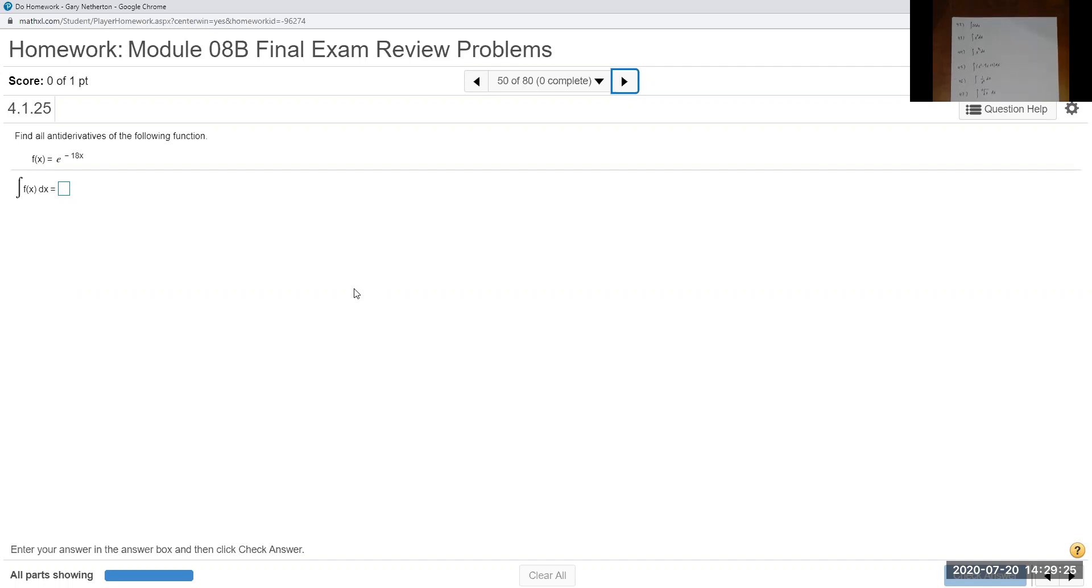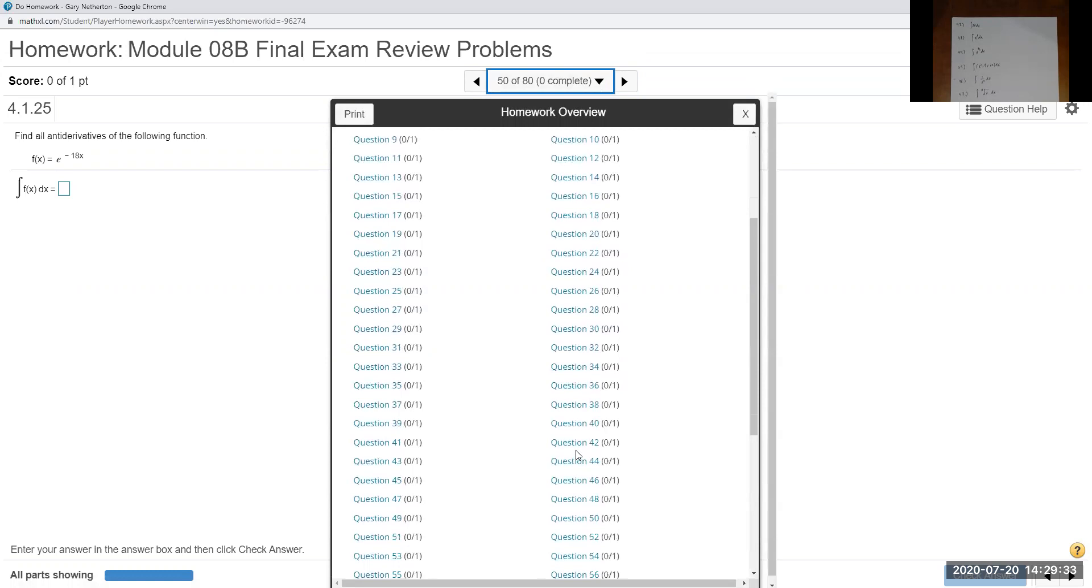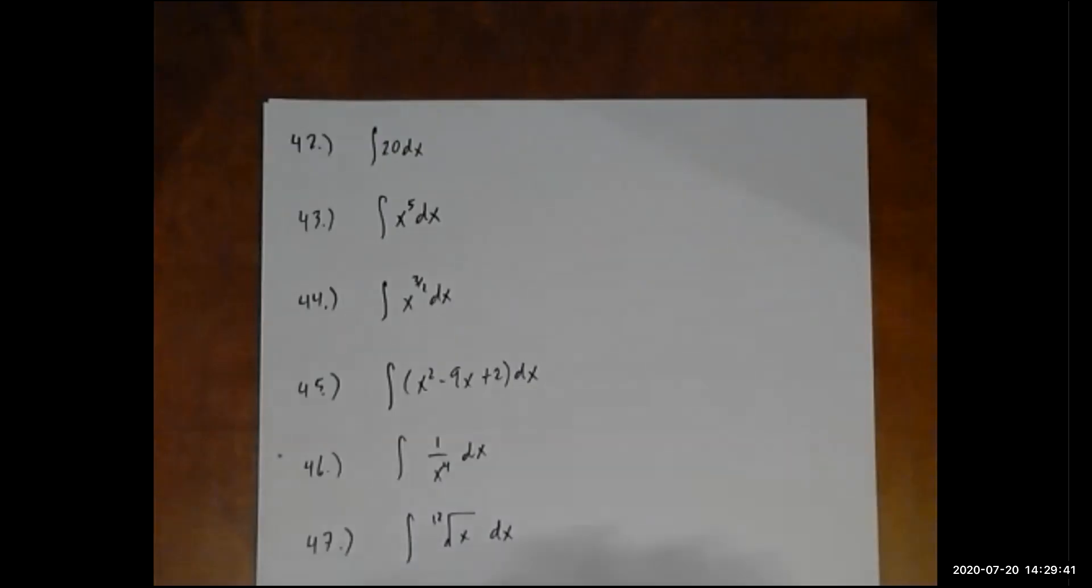This one, basically 50, is going to be the integral of e to the negative 18x. All right, let me go back to 42, so it's time to put in the answers. All right, here we go. Rules are pretty straightforward on these integrals.